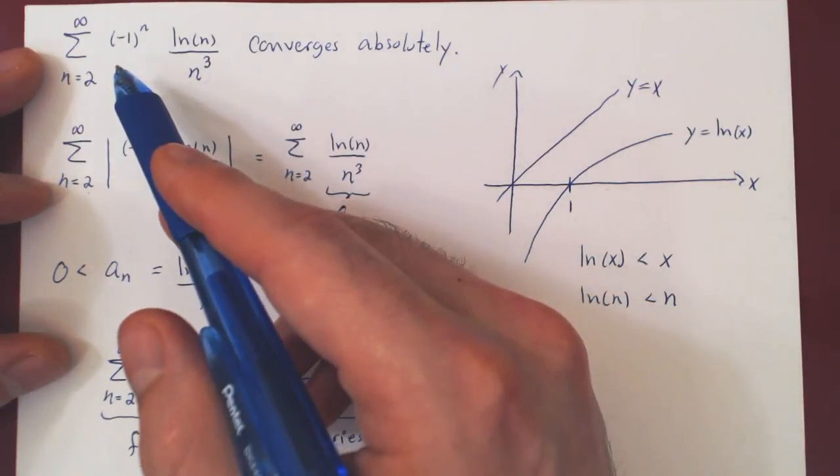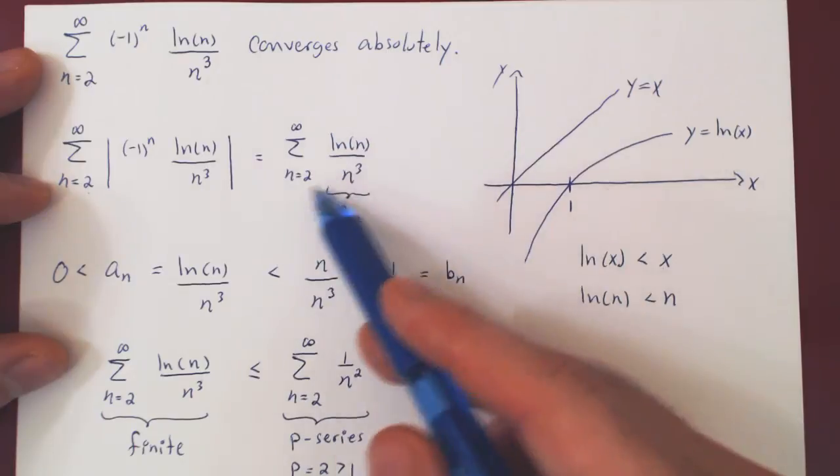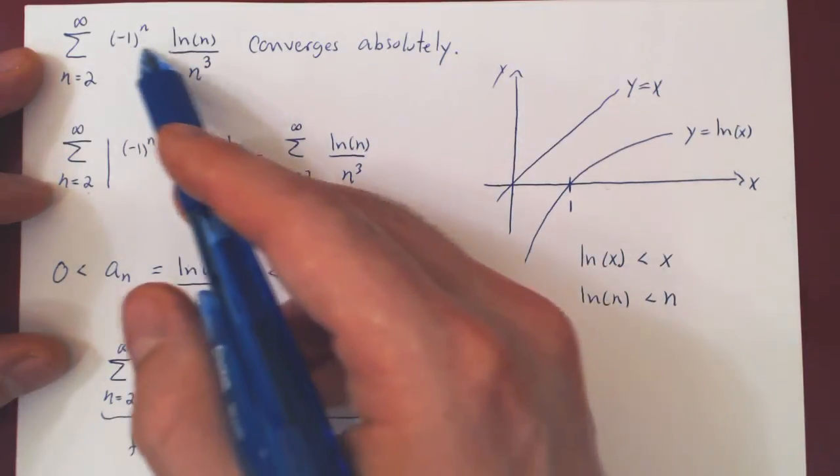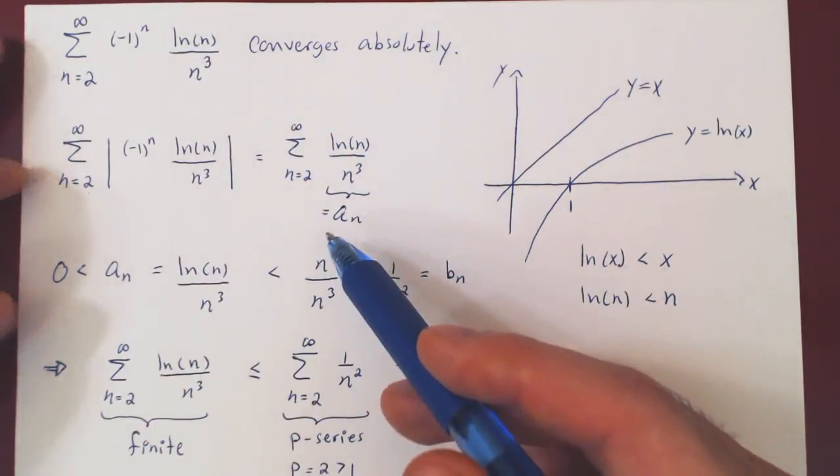So whenever you have absolute convergence, you have, for free, convergence of the initial series. And that's it.